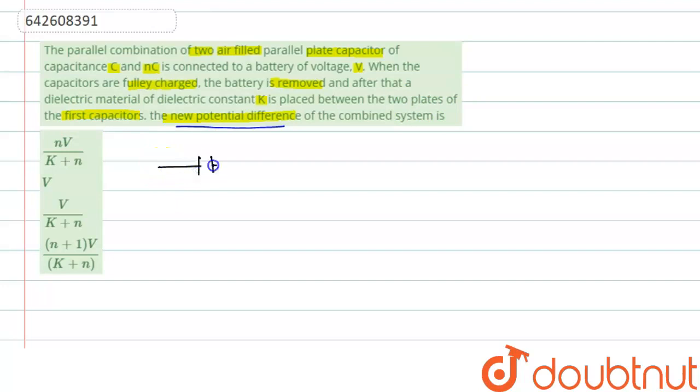If we draw the diagram when the battery is connected, it will be like this. This is C and this is nC, and the battery is connected in this way. When the battery is disconnected, this circuit will be fully charged and this can be written as Q = CV for this plus nCV. This will be total charge, and if we take common CV, we can write (n+1)CV. So this is the total charge in this circuit when the battery is removed.